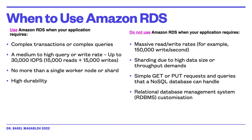You don't use Amazon RDS when your application requires massive read or write rates — for example, 150,000 writes per second. When sharding is mandatory in your application, because you have to use your own sharding technique with your database system. When you need to deal with your data using simple get or put requests and require a NoSQL database system, or when you need a very customized version of a database engine — in this case, you have to install your own database system.